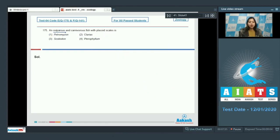Question number 175. An oviparous and carnivorous fish with placoid scales is. Placoid scales are characteristics of cartilaginous bony fishes. Whereas cycloid or ctenoid scales are characteristics of bony fishes which are osteichthyes.